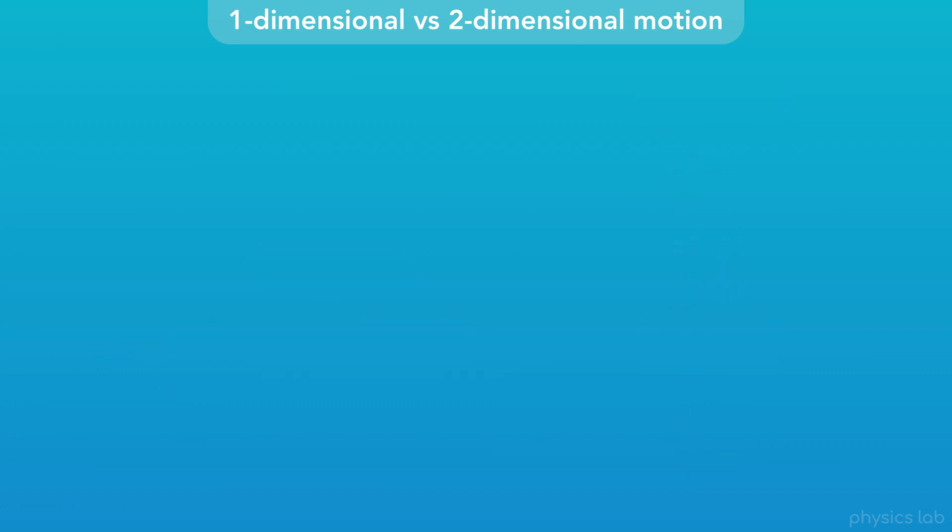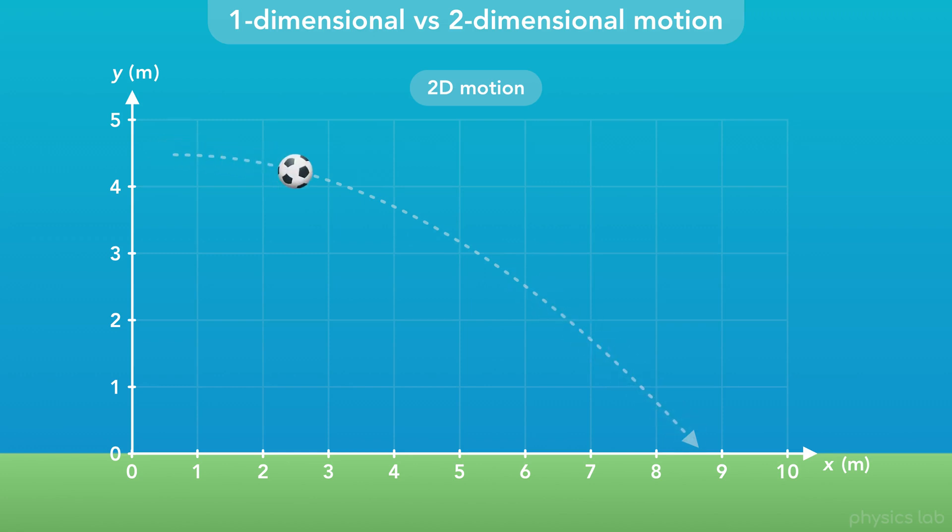But if an object is in two-dimensional motion, or 2D motion, its position on the X axis and the Y axis are changing at the same time.